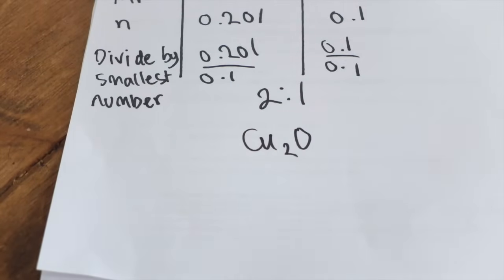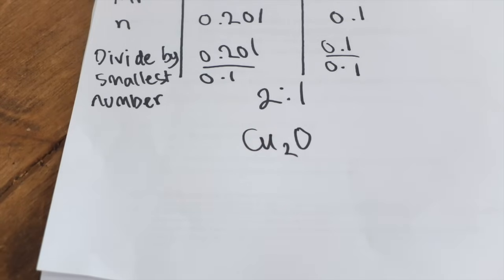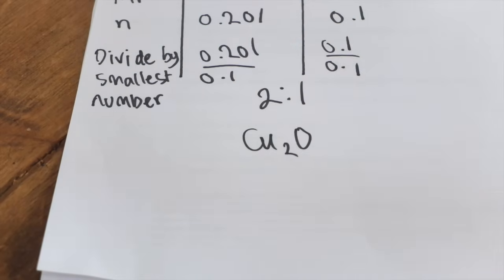I just want to quickly mention a couple of other things about empirical formulae. If you're not given a mass in the question but are given percentages — like 50% carbon, 25% hydrogen, 25% oxygen — simply use the percentage value as your mass in grams. So if it was 50%, your mass would be 50 grams. Also, if the ratio isn't a whole number — say it was 2.5 to 2 — you can't have non-whole-number ratios, so multiply by a number that makes it whole. In that case multiply both sides by 2 to get a ratio of 5 to 4.